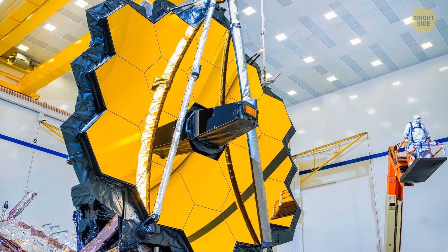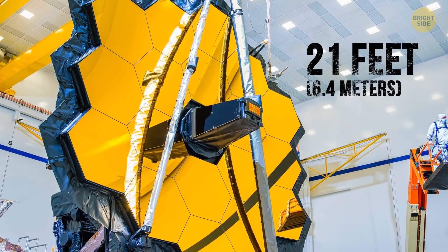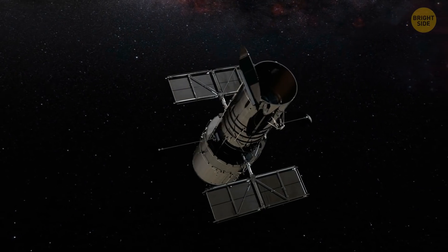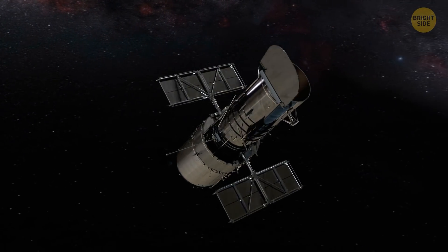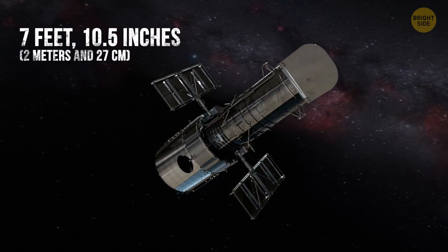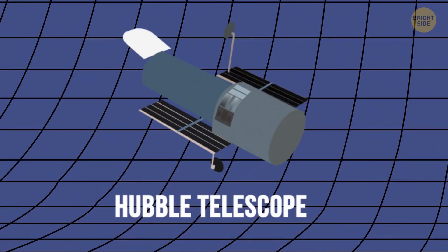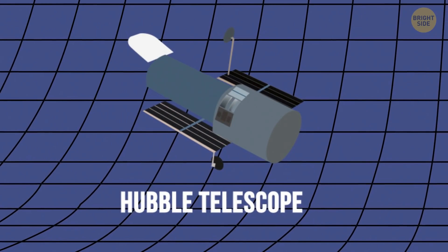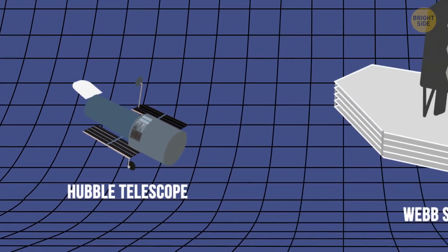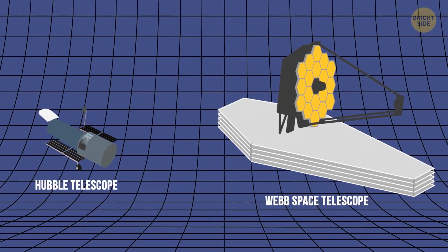The primary mirror of the JWST is over 21 feet wide. The Hubble Space Telescope, the previous largest eye in space, has a mirror of about 7 feet, 10 and a half inches. By comparison, if you place the two telescopes side by side, it'd be like putting a horse next to an elephant. And elephants are enormous.